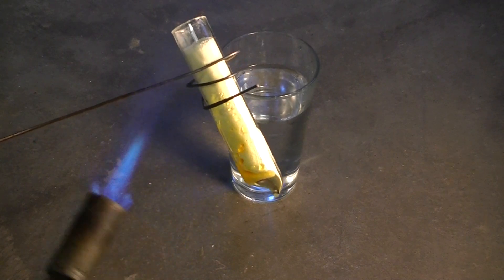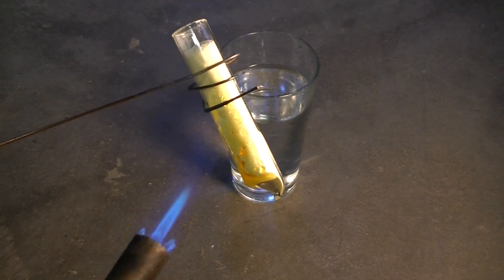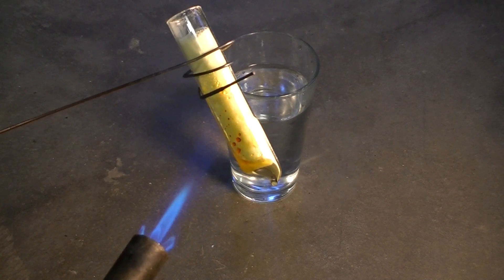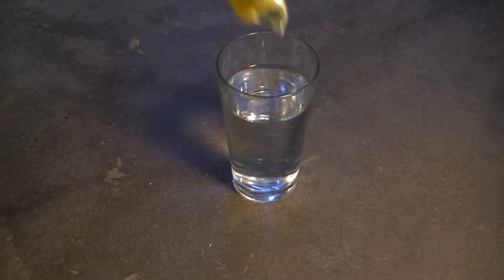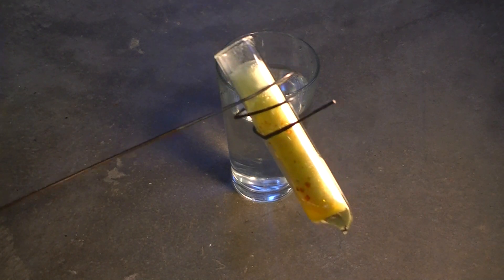When an element is said to have allotropes, it is one way of saying that that element can arrange its atoms in various structures. For example, carbon has a number of allotropes - we are commonly aware of diamond and graphite.